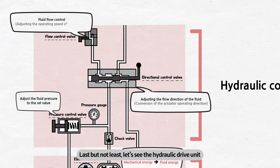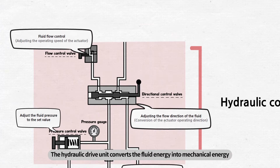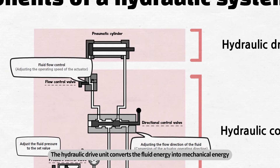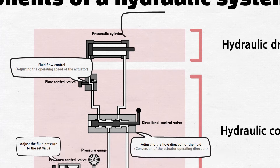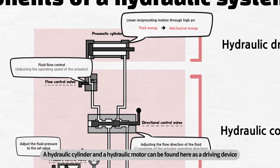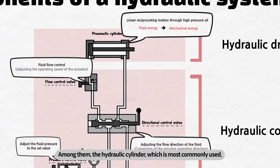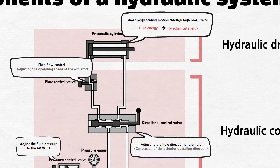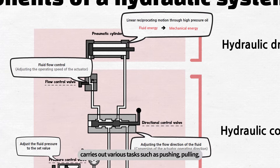Last but not least, let's see the hydraulic drive unit. The hydraulic drive unit converts fluid energy into mechanical energy. This section is where the actual operation takes place through the high-pressure oil. A hydraulic cylinder and a hydraulic motor can be found here as driving devices. Among them, the hydraulic cylinder, which is most commonly used, carries out various tasks such as pushing, pulling, and moving objects through a linear and reciprocating motion.